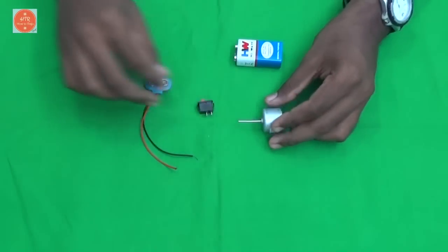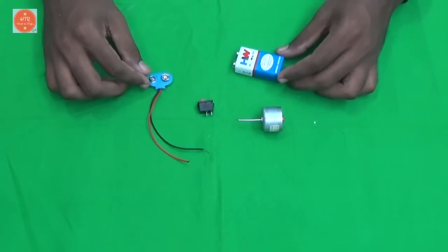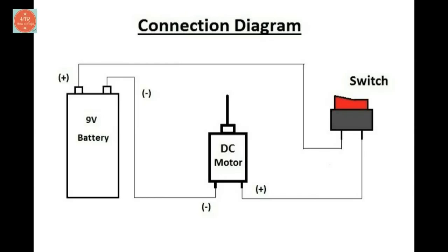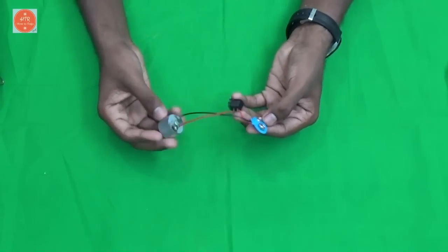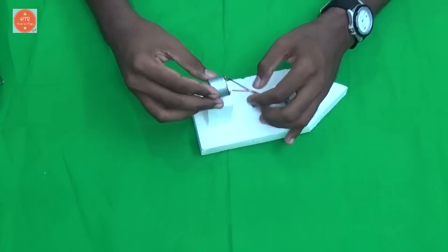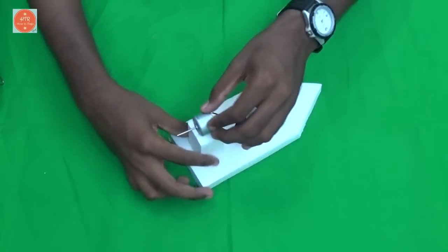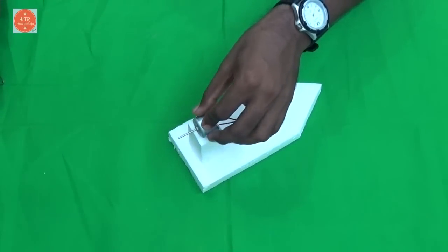Now I am going to connect these components as per the circuit diagram. After the wire connection, now I am going to place the motor, DC motor in this place using the glue gun.